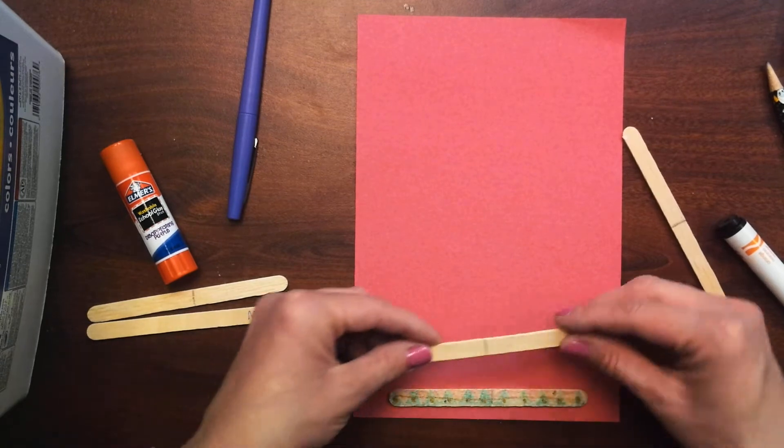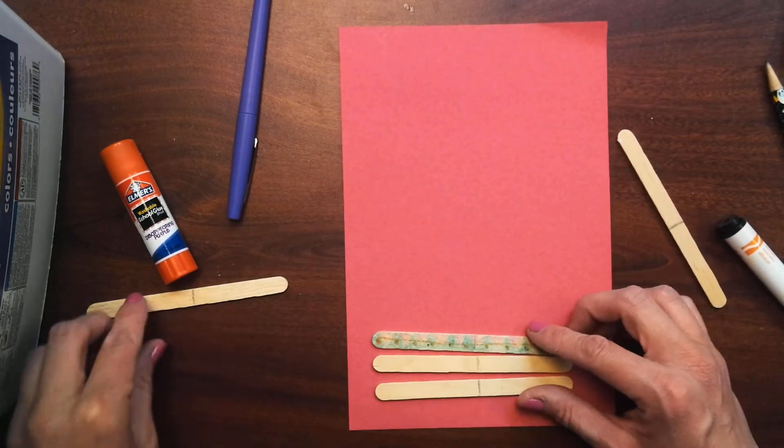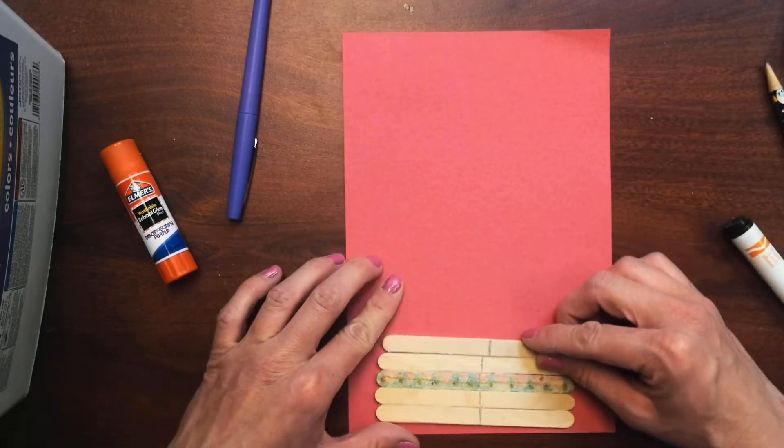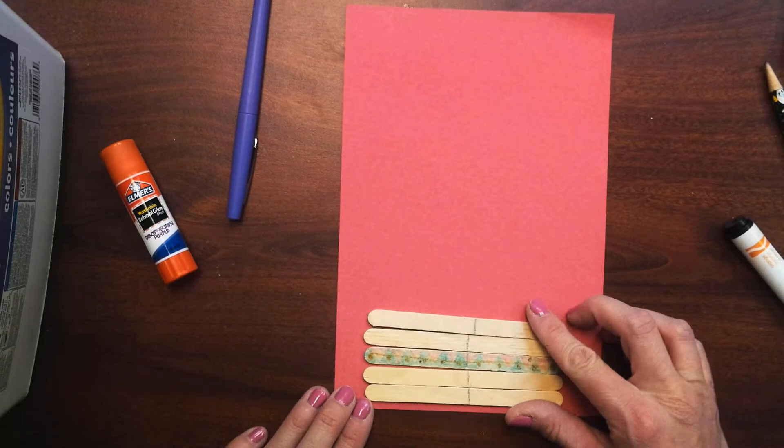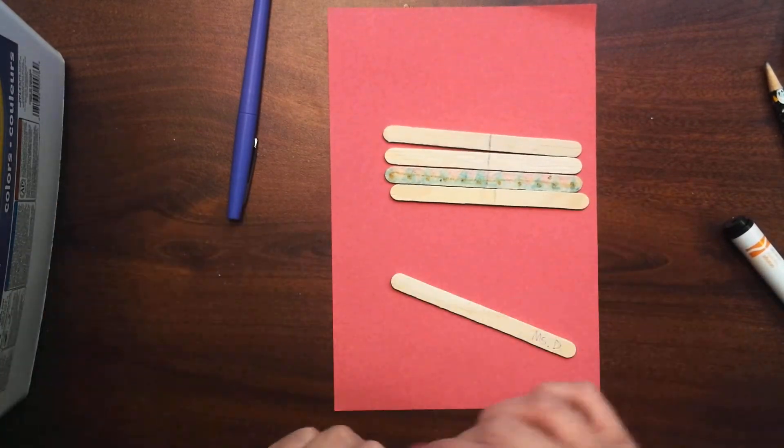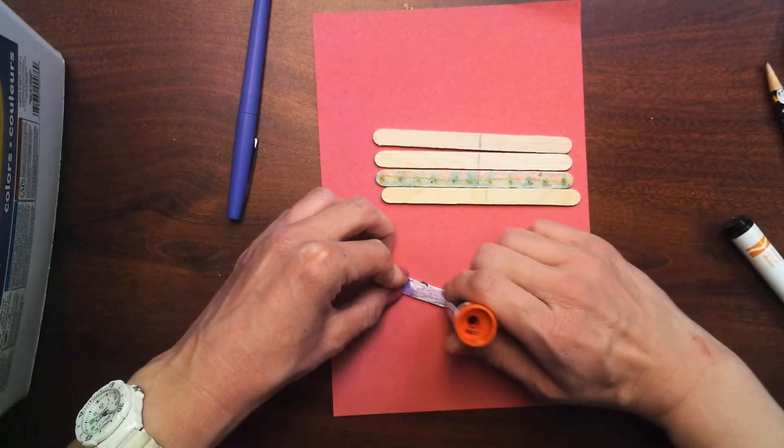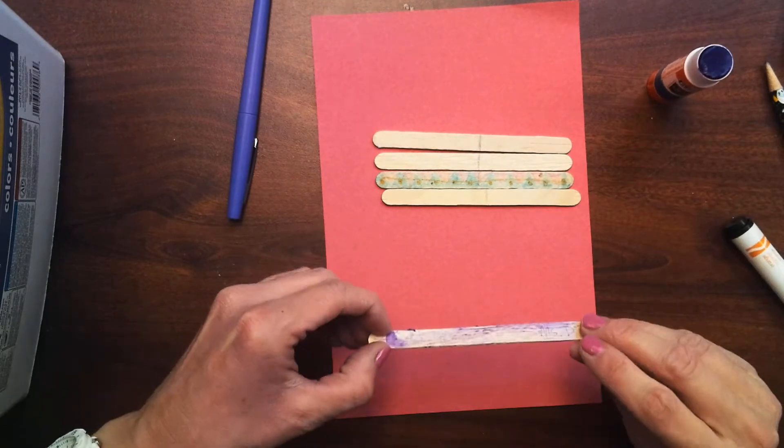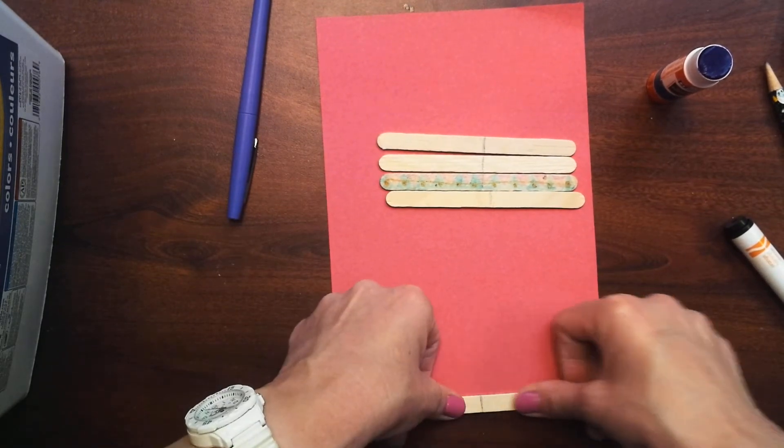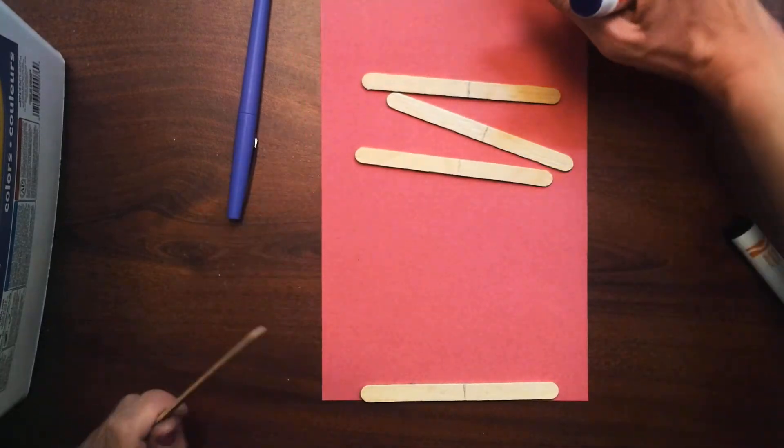I'm going to choose, pretend like mine are all decorated, right? I'm going to choose the order I want them in and then glue them at the bottom of my paper. Remember that a little bit of glue goes a long way. I'm going to use some glue sticks and push them down. I'm going to glue my other ones on and then I'll show you another trick.